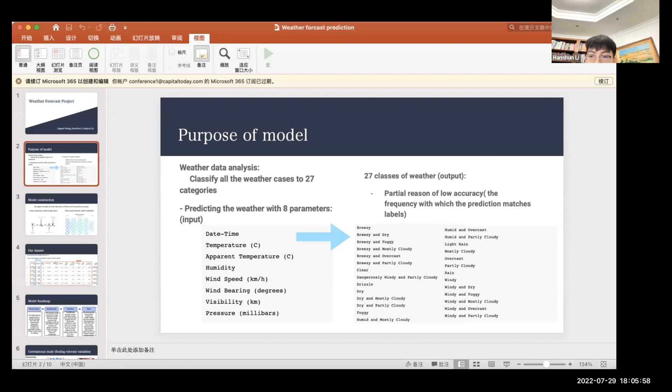We'll talk about this later, but the partial reason our models have a lower accuracy than predicted is because we had such a large range of classes. And the accuracy value is basically the frequency with our predictions and how it matches the labels.